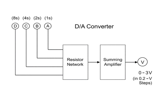This block diagram shows a digital-to-analog converter with four digital inputs that pass through a resistor network. A summing amplifier alters the voltage output that can vary from 0 to 3 volts at increments of 0.2 volts.